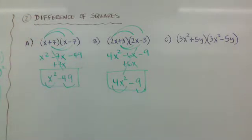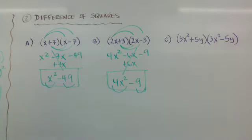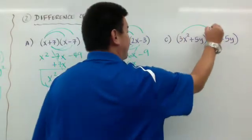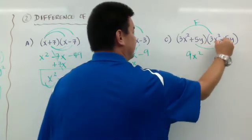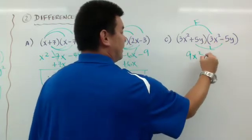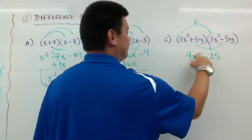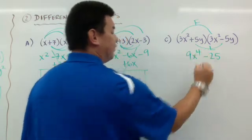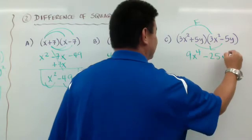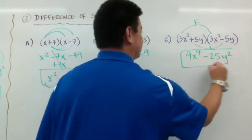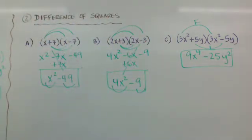If you notice with difference of squares, you don't even need to do the O and the I — you can just do F and L. But make sure you use the negative. For (3x²+5y)(3x²-5y), when I do F for FOIL I get 9x to the fourth, and when I do L for FOIL I get minus 25y squared. So your answer is 9x to the fourth minus 25y squared.